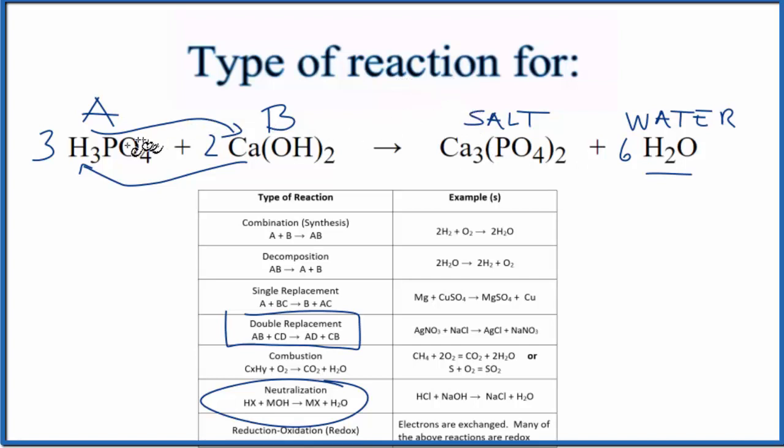So those are the types of reaction for H3PO4 plus Ca(OH)2. We have a double replacement and a neutralization. This is Dr. B, and thanks for watching.